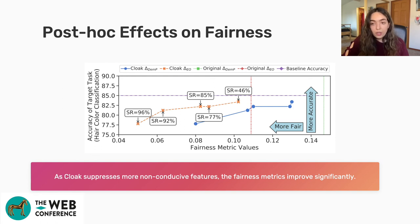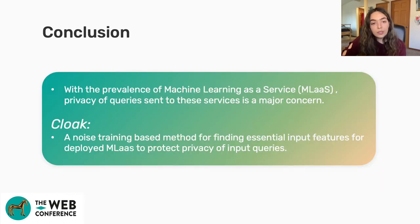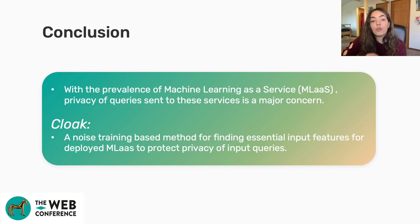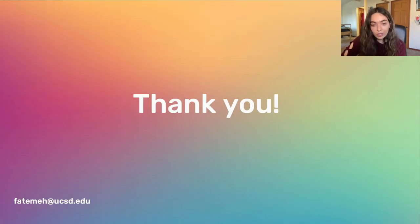Finally, we examine Cloak's effect on classifier fairness in terms of gender, looking at two metrics: demographic parity and equality of opportunity. Since Cloak removes features that may bias the classifier, it also improves both fairness metrics while incurring only little loss to main task accuracy. In summary, with the prevalence of machine learning as a service, query privacy is a major concern, and Cloak is a noise-training-based method for finding essential input features for a deployed ML model and suppressing the rest to protect privacy.